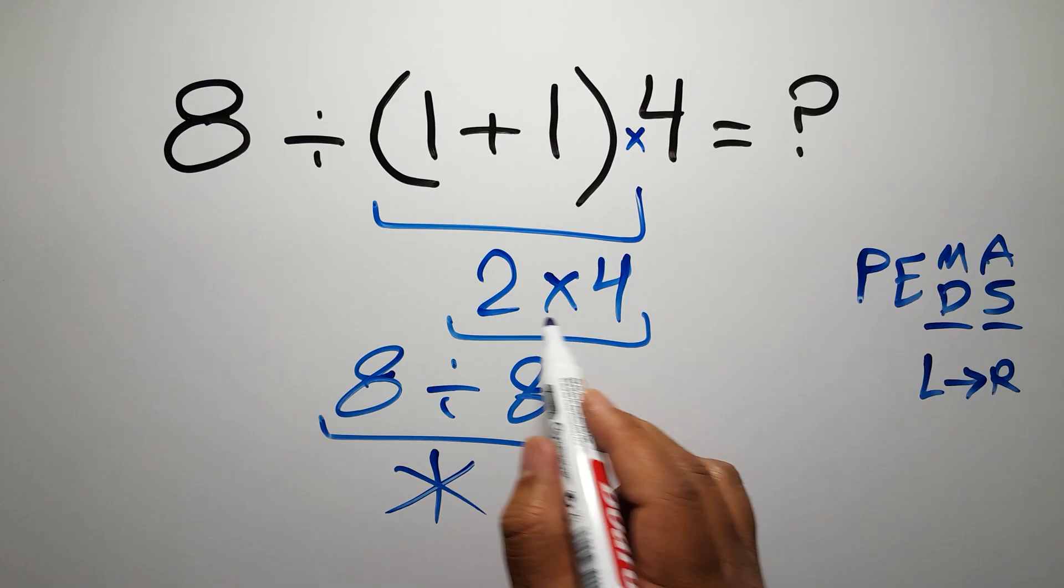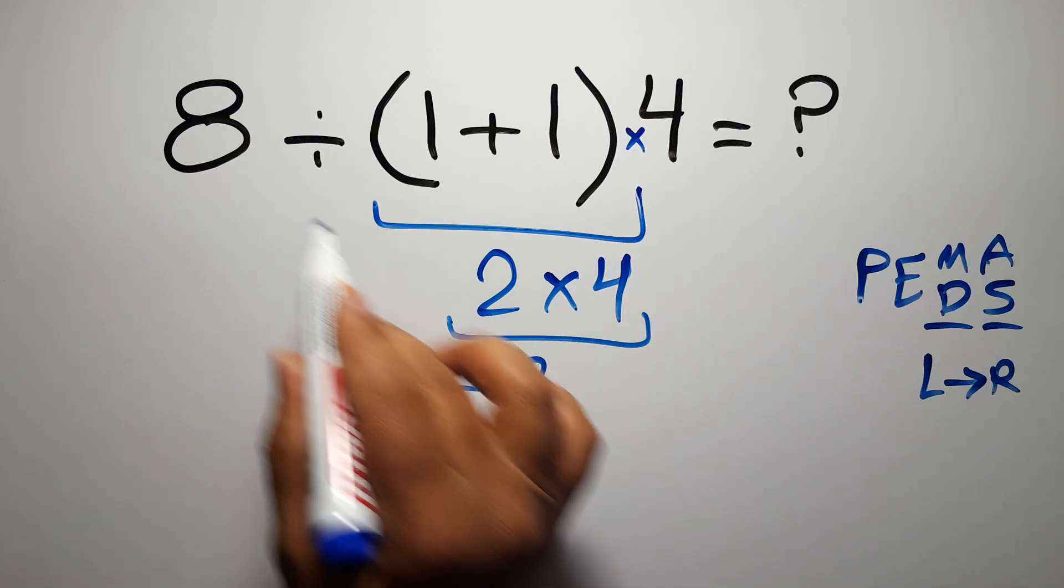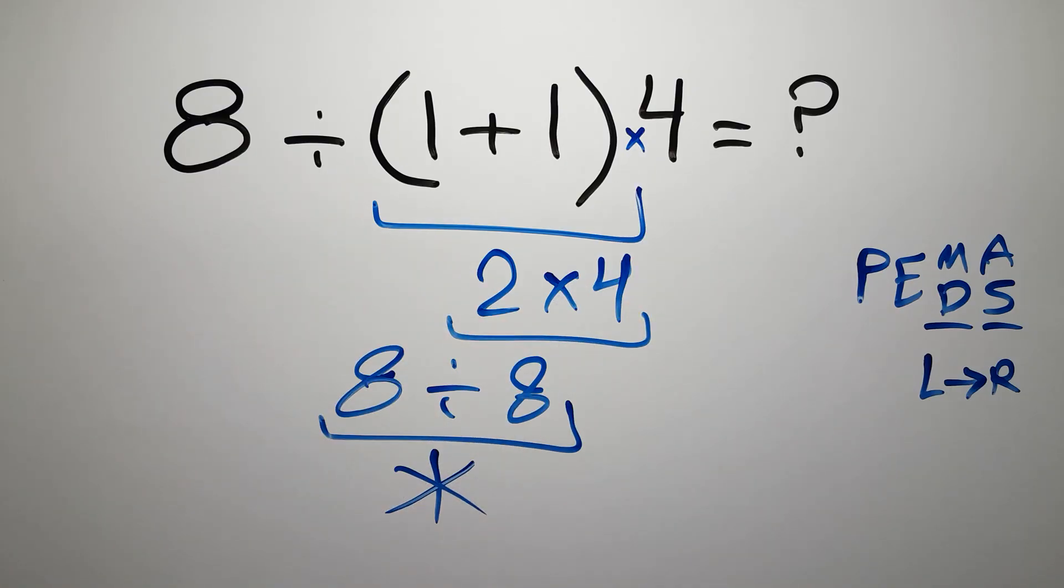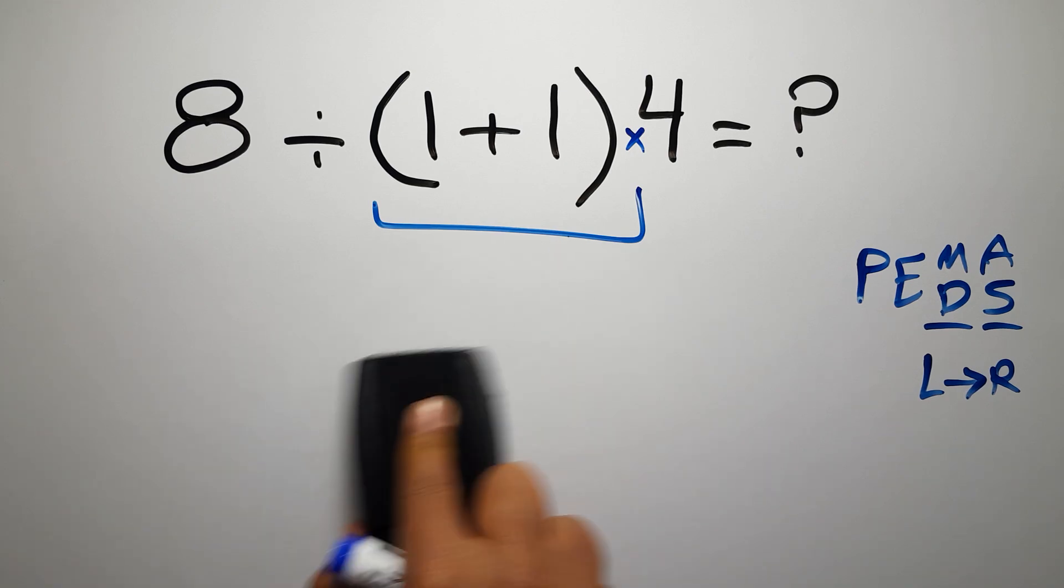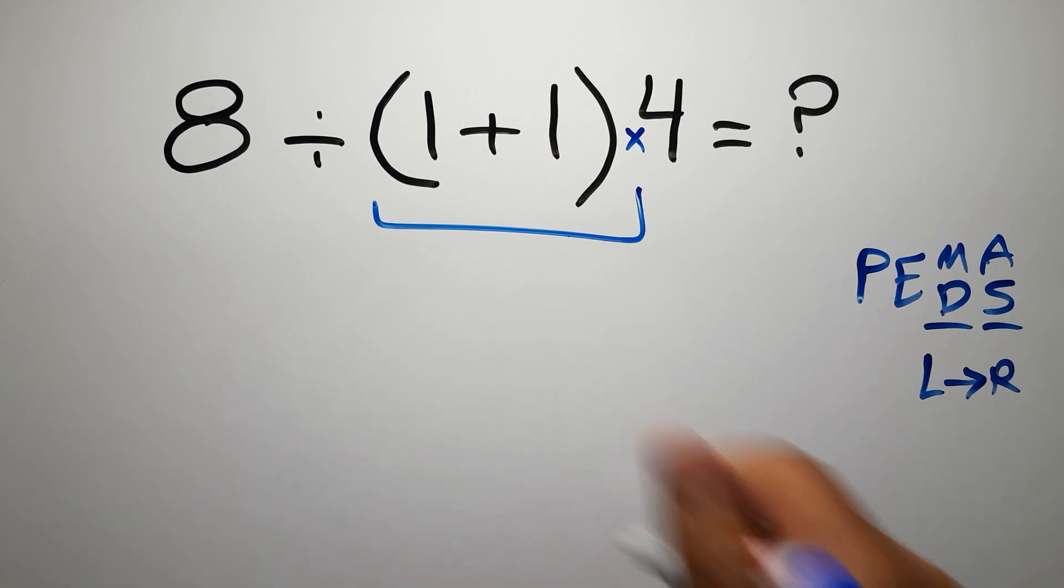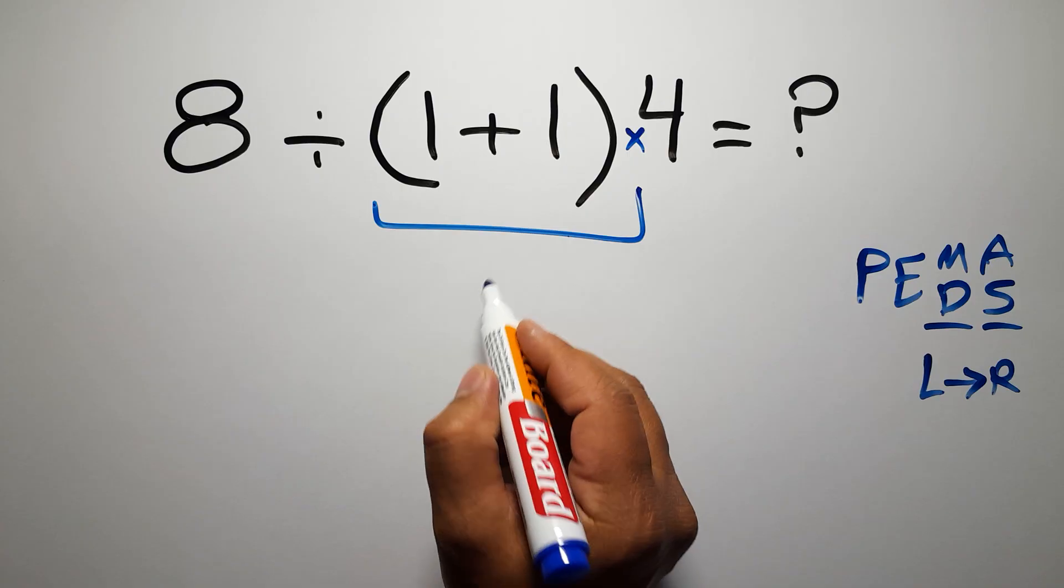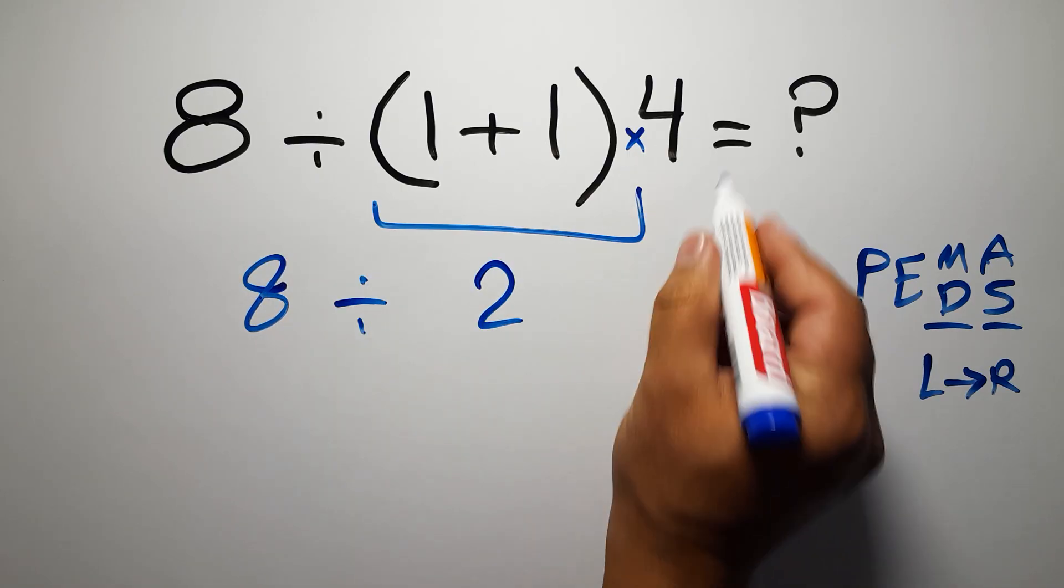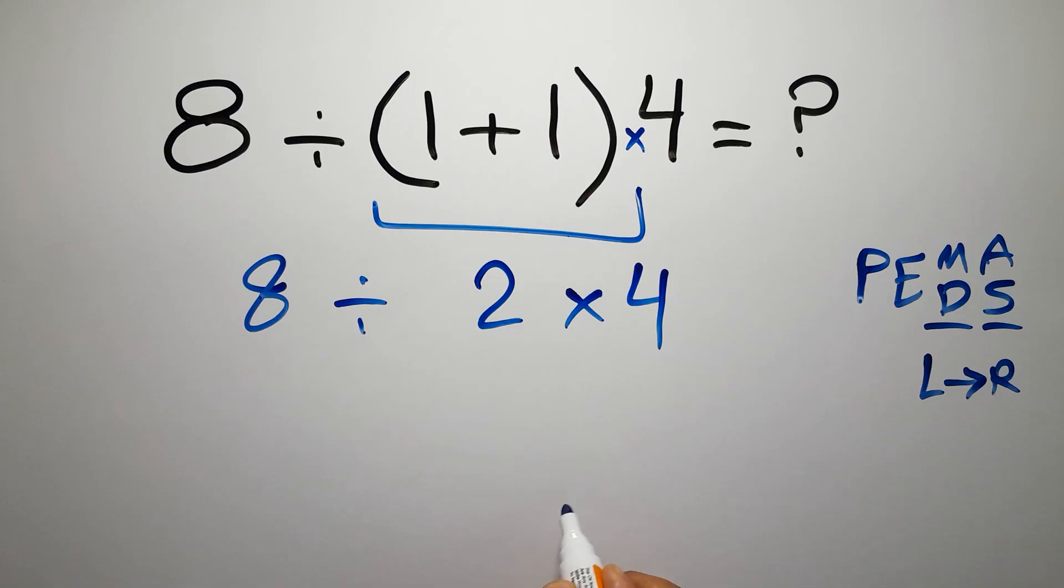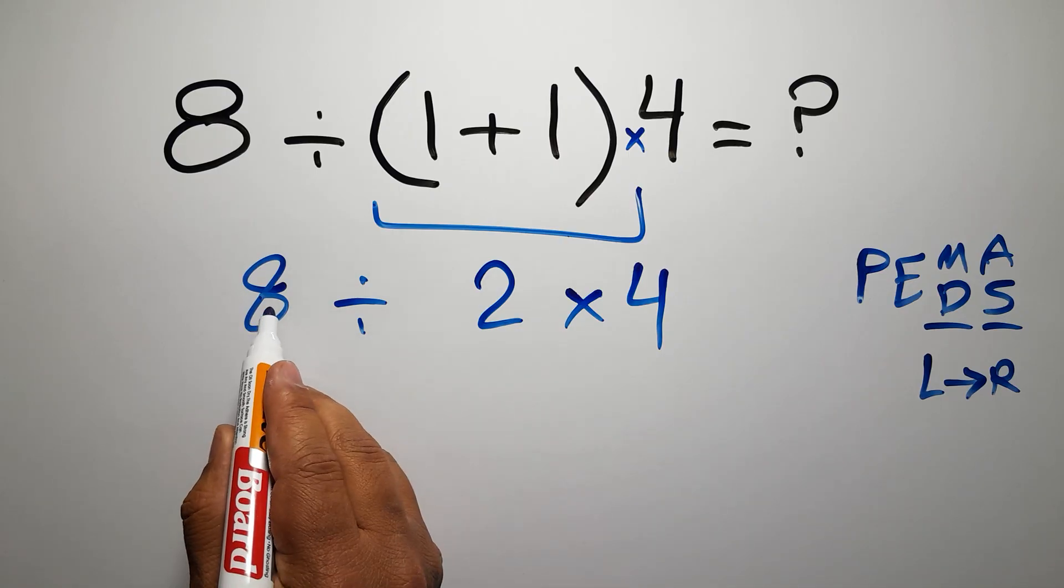If you do this multiplication before this division, it is wrong. So first, this parentheses: 1 plus 1 gives us 2. So 8 divided by 2, then times 4. Now we have to work from left to right. First, 8 divided by 2, which equals 4.